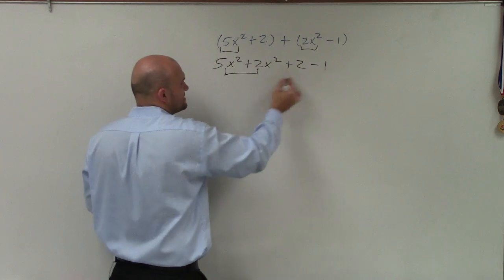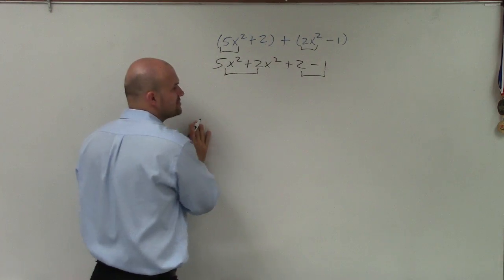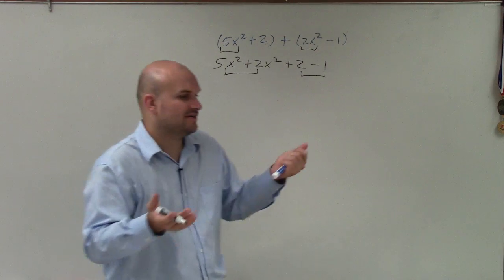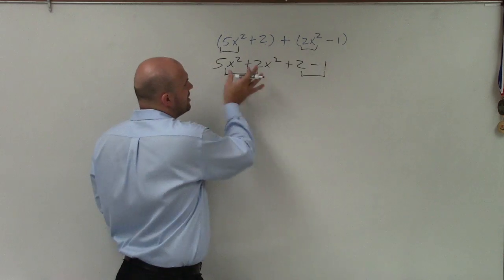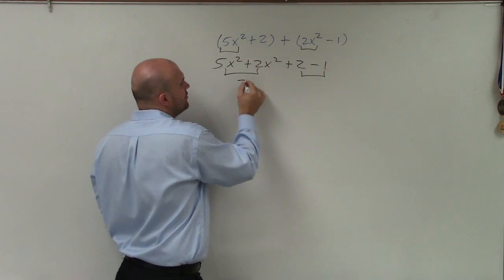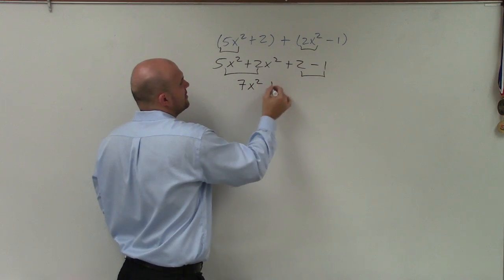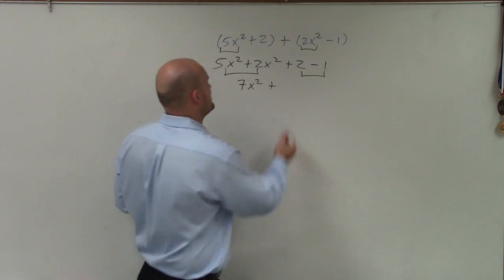Now, I can combine my x squareds and my constants. So 5x squared plus 2x squared. Again, just kind of think of it as like 5 apples plus 2 apples. Right? The x squared is just your variable, but what you're adding is the coefficient, which is 5 and 2, which gives you 7x squared plus. And then 2 minus 1 is just going to be a positive 1.